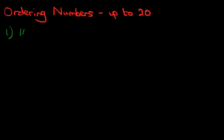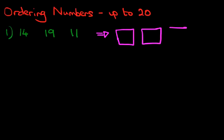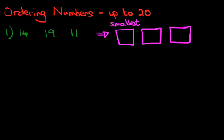Suppose you have these three numbers: we've got 14, 19, and 11. The question states that you've got to put these three numbers in order. Let's just draw the three boxes. You have to put them in order starting with the smallest first, so we can put an arrow across and say smallest to largest.